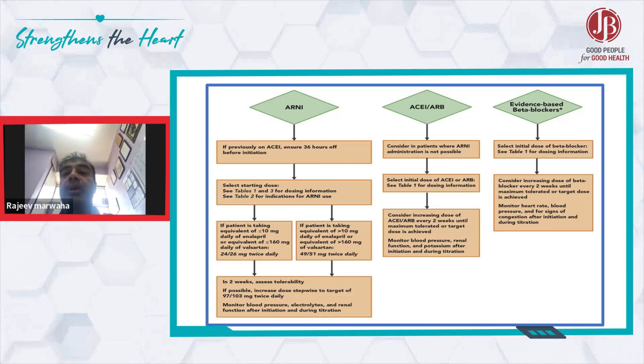For example, if the patient is already on 40 milligrams of telmisartan, you can shift to 50 milligrams per day. You can titrate the dose based on renal function. Monitor renal function, blood pressure, and potassium levels after initiation and during titration, then subsequently increase the dose.